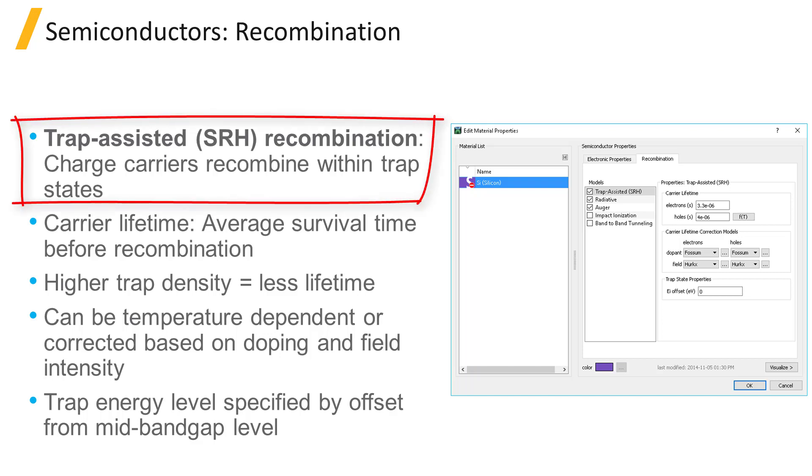Recombination occurs when an electron relaxes, transfers energy to the lattice or emits a photon, to the trap state from the conduction band, and sequentially a hole from the valence band relaxes to the same trap state.